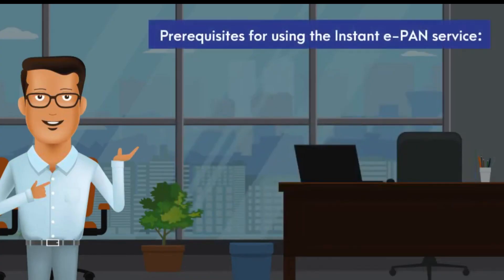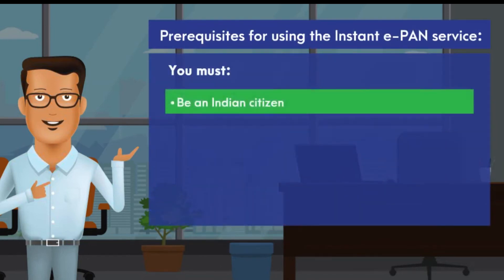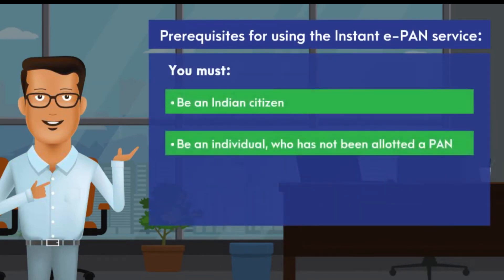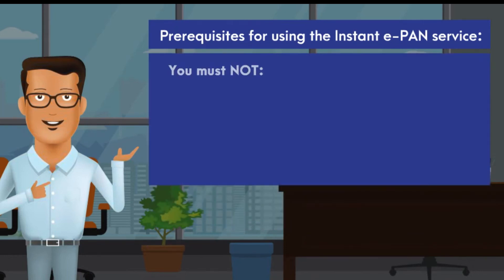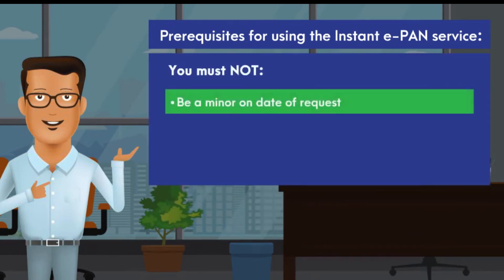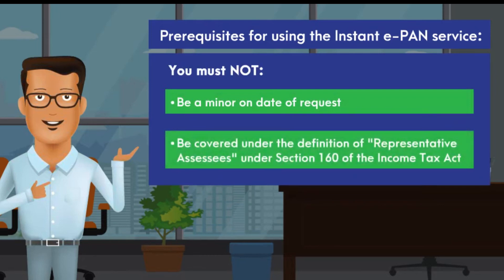To use the instant e-PAN service, you must be an Indian citizen, be an individual who has not been allotted a PAN, have a valid Aadhaar and mobile number linked to Aadhaar. You must also not be a minor on the date of request, and not be covered under the definition of representative assesses under Section 160 of the Income Tax Act.